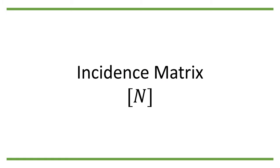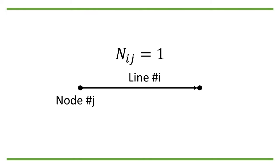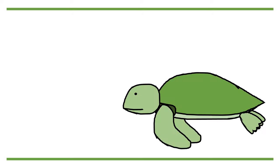We define an n by n incidence matrix N as the following: the entry N_ij is 1 when the starting point of line number i is node number j, minus 1 when the ending point of line number i is node number j, and 0 otherwise. The direction must be assigned for every line, but it can be arbitrarily chosen.